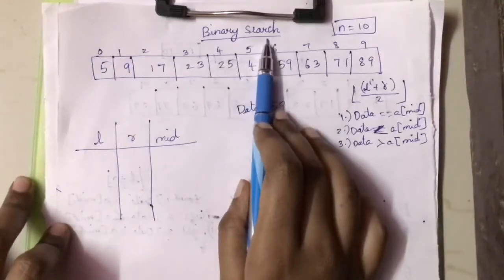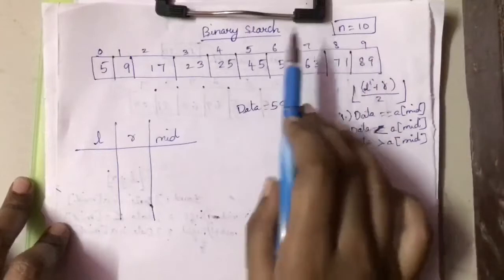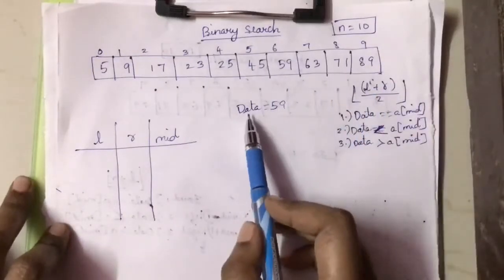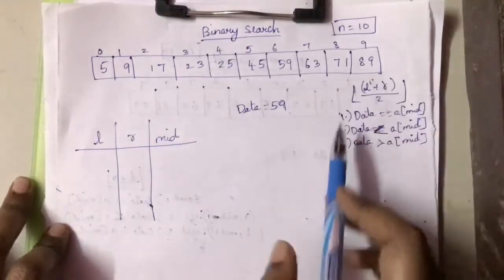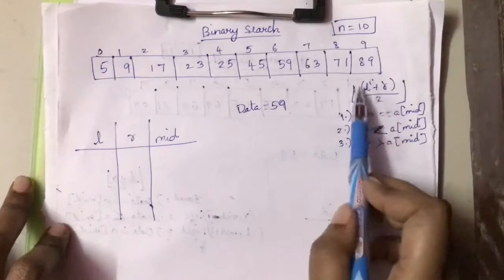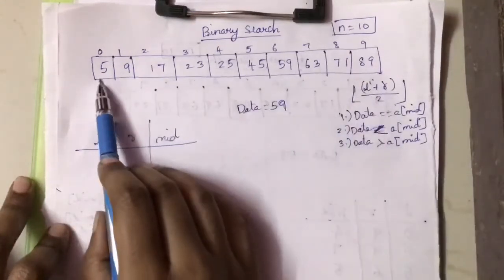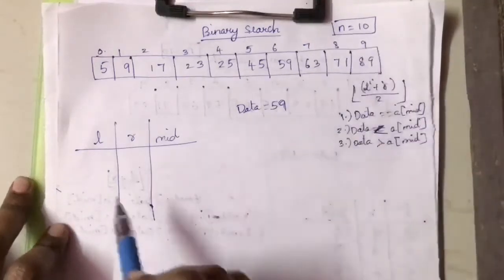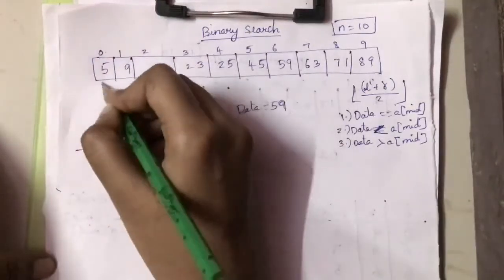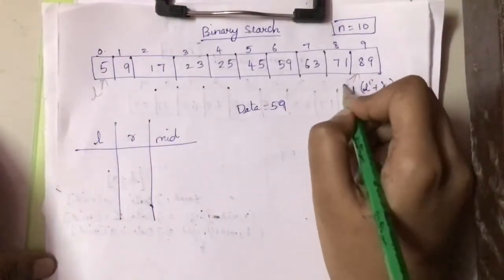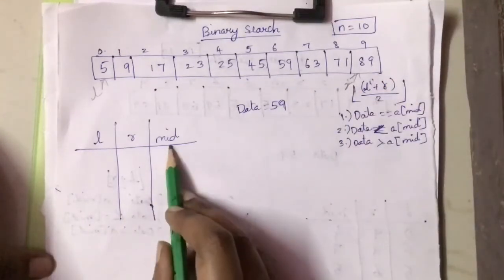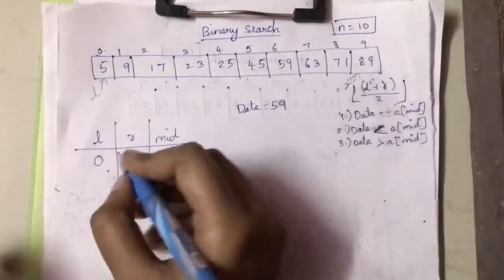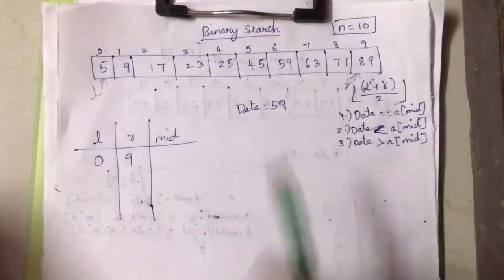In binary search we apply the method called divide and conquer. Here we have n equals 10 elements, and we have assigned an index for each element. We are going to search for the value 59 in this array. We apply the formula: l plus r divided by 2 (floor value), where l is the leftmost index and r is the rightmost index.